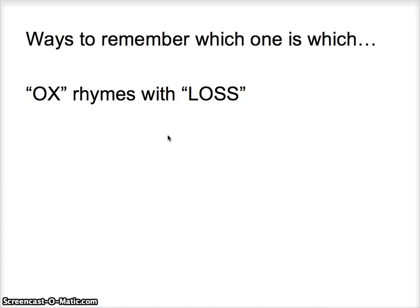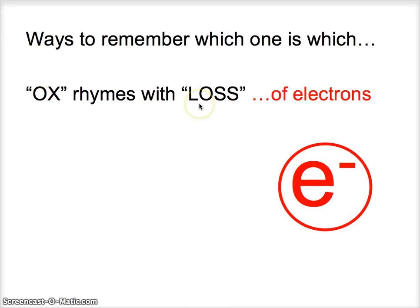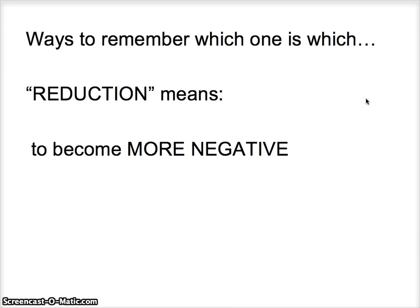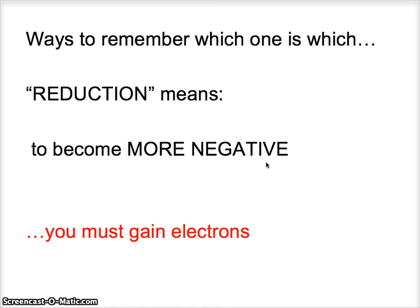I always thought that sort of rhymed together. I always referred to 'ox' as oxidation and 'loss' referring to the loss of electrons. You can also just use simple logic: the word 'reduction' means to become more negative, and in order for something to become more negative, you must gain electrons. Whichever method works for you is the best one to use to remember what is reduction and what is oxidation.